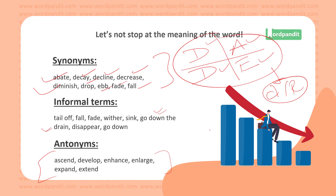The opposite of dwindle — antonyms — include: ascend, develop, enhance, enlarge, expand, extend. If you look at it pictorially, instead of a downward arrow you've got an upward arrow — that is what these antonyms stand for. This is one simple cluster of words learned today, and this is how you learn words along with their related words to improve your learning.